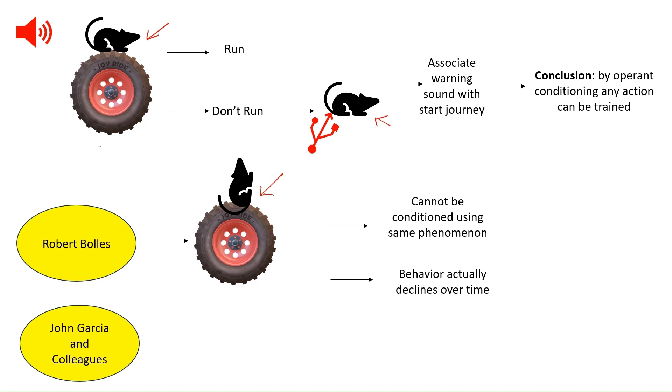The scientists who worked on further experiments were John Garcia and colleagues. They said that these white rats can learn to avoid some, but not all, sensory cues that are associated with certain consequences.